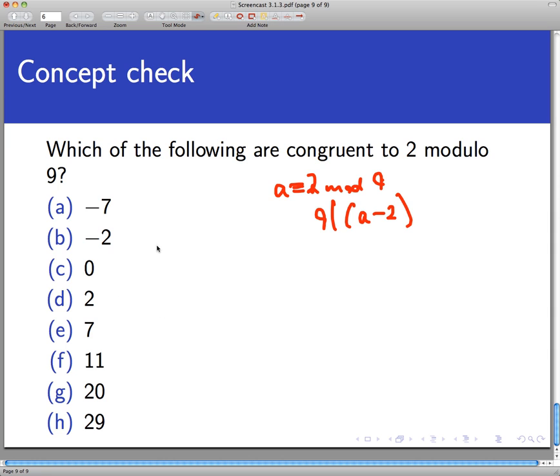Definitely A is correct here because negative 7 minus 2 is negative 9, and 9 divides that, so this is congruent to 2 modulo 9. Negative 2 is not congruent to 2 modulo 9 because negative 2 minus 2 is negative 4, and 9 does not divide negative 4, so that's out. 0 is also out because 0 minus 2 is negative 2. 9 doesn't divide that, so that's gone.